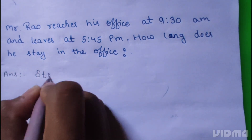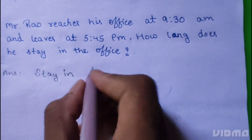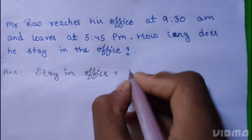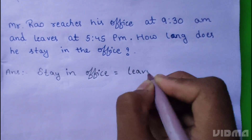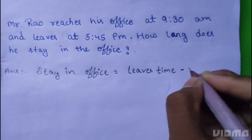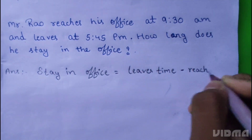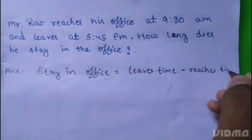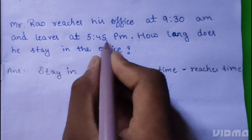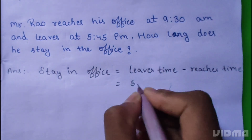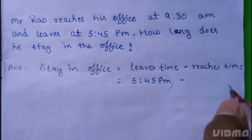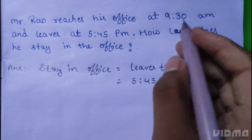Stay in office equals leaves time subtract reaches time. Leaves time is 5:45 PM. Subtract reaches time: 9:30 AM.